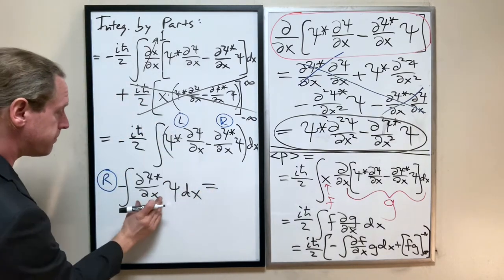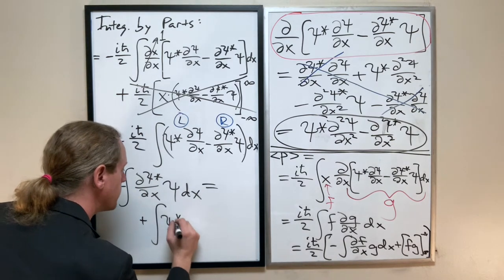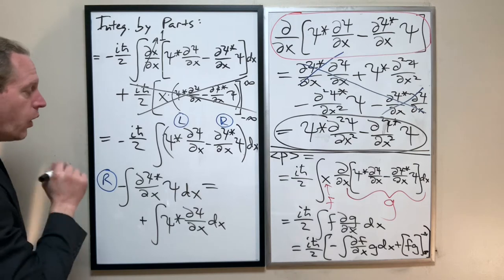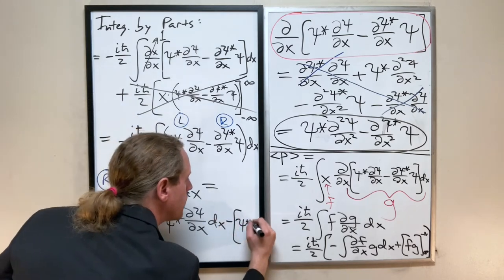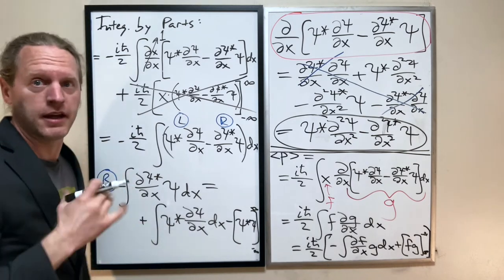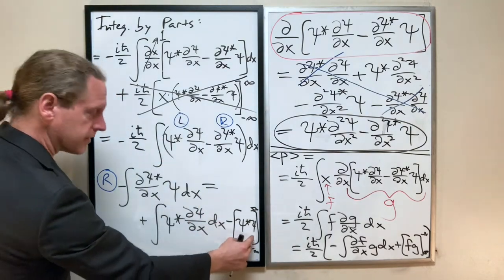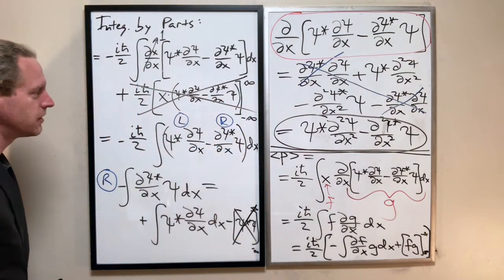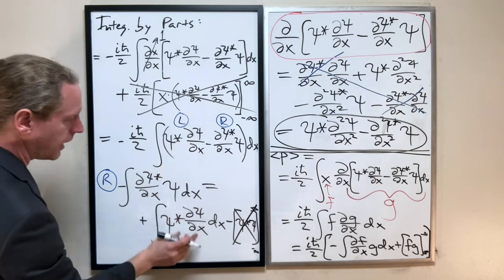So, at this point here, when we flip that, we negate the negative sign, so we end up with a plus integral of ψ* dψ/dx dx. Now, our surface term gets the negative sign again, but the surface term is simply just ψ* ψ from negative infinity to infinity. And, again, as we just argued, if ψ² is normalizable, it has to be zero at those infinity points. So, this whole thing, we can rewrite in terms of a ψ* and a dψ/dx.